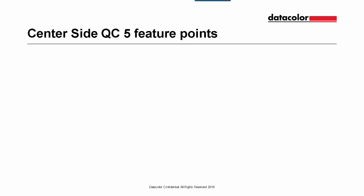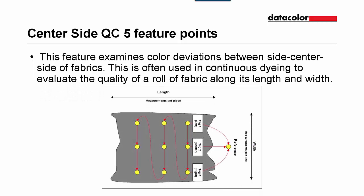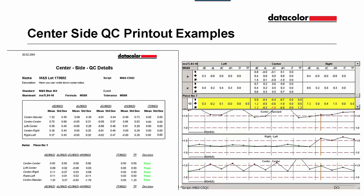The option Center Side QC is worth five feature points. This feature examines the color deviations between side, center, side of fabrics. This is often used in continuous dyeing to evaluate the quality of a roll along its length and width. Below are some examples of printouts from the Center Side QC option — on the left we have statistics on our readings and on the right we have control charts. If we need any help on Center Side QC, please consult our support department.